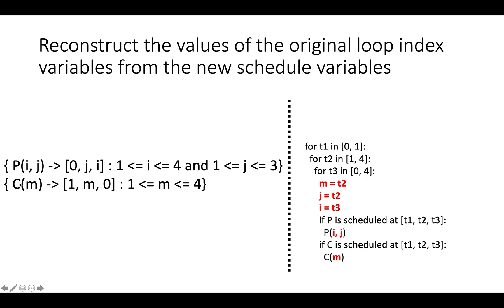So the variable C(m) is mapped to time, or the statement instance C(m) is mapped to time t1, t2, t3, which means that m should just be equal to t2. And then j is mapped to time component t2. So we'll say j equals t2, i equals t3. And then we'll say if P is scheduled at time t1, t2, t3, then we'll do P(i,j). If C is scheduled at time t1, t2, t3, we'll do C(m).